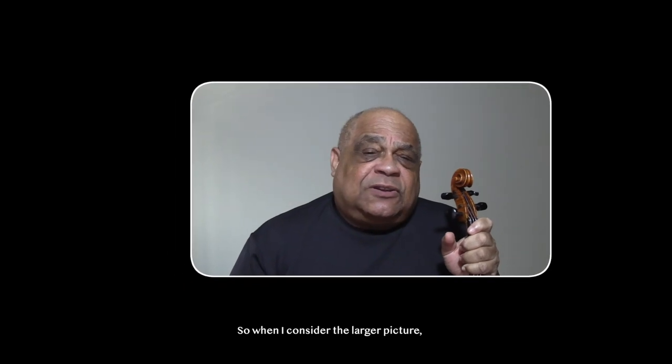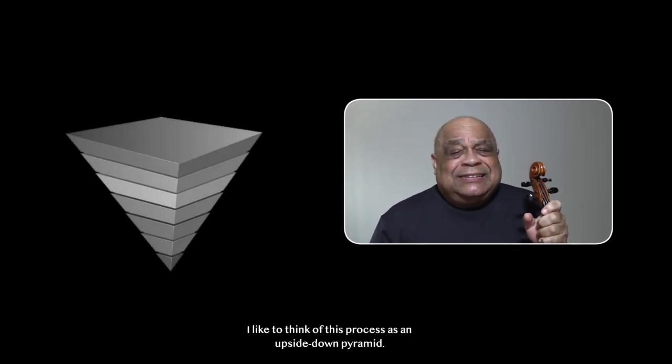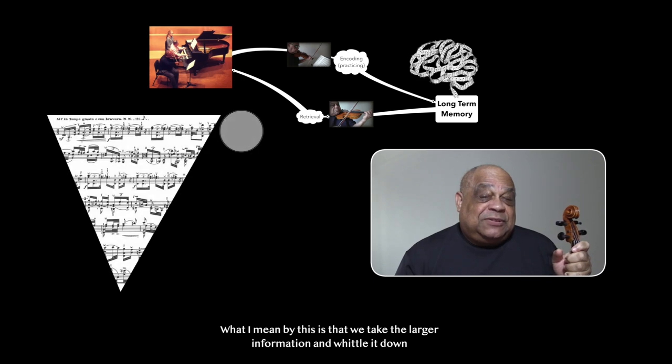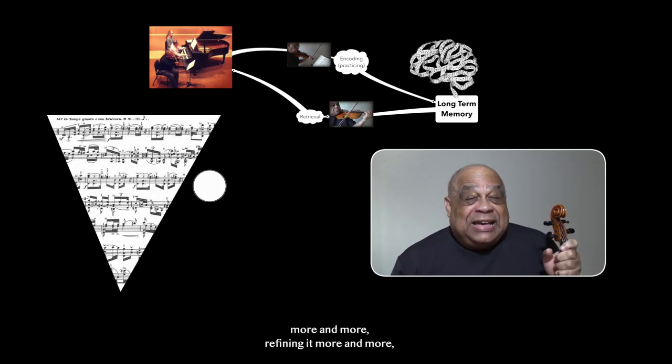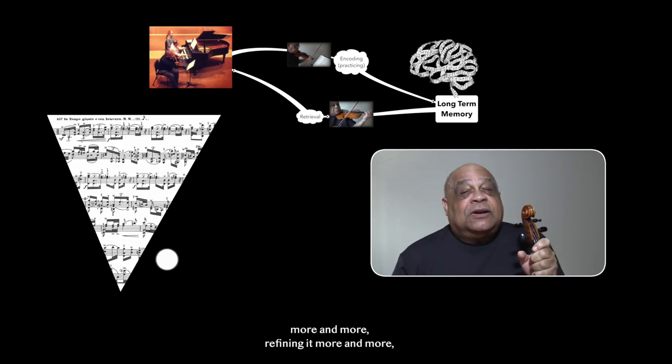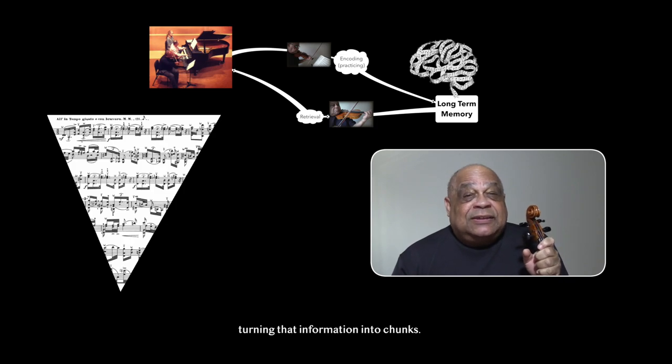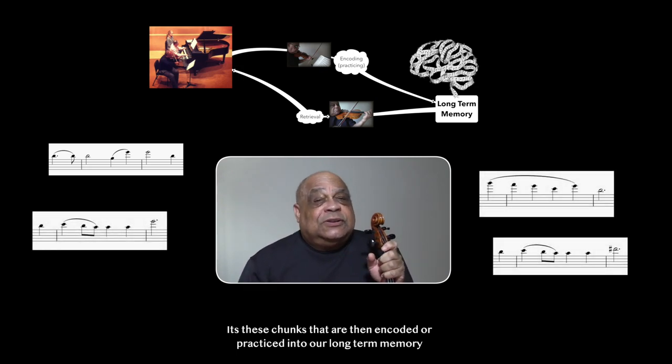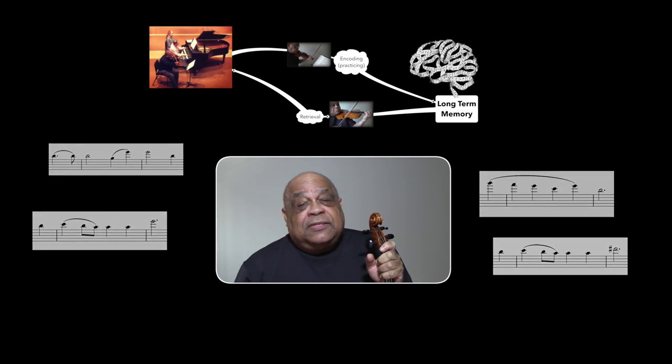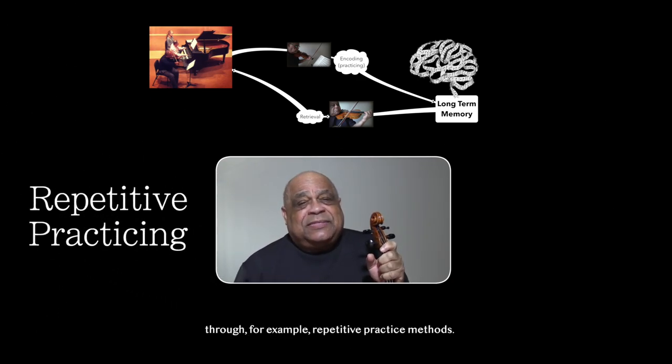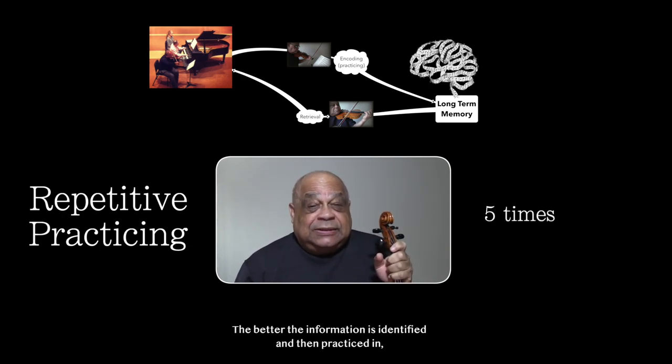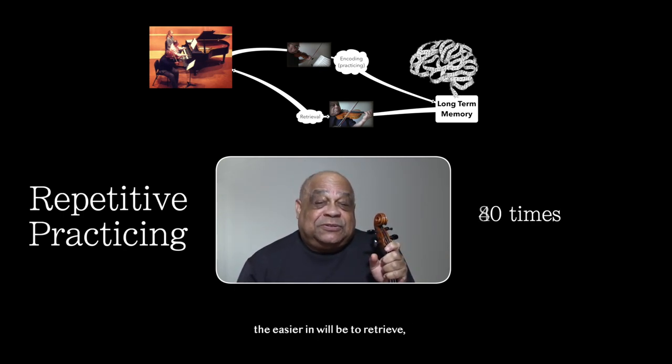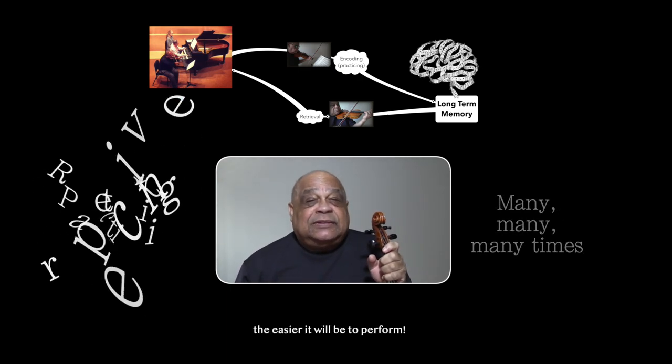So, when I consider the larger picture, I like to think of this process as an upside-down pyramid. What I mean by this is that we take the larger information and whittle it down more and more. Refining it more and more. Turning that information into chunks. It's these chunks that are then encoded or practiced into our long-term memory through, for example, repetitive practice methods. The better the information is identified and then practiced in, the easier it will be to retrieve. The easier it will be to perform.